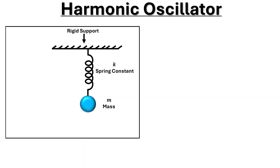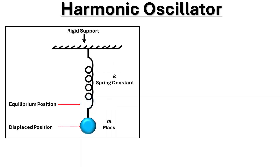We have a pictorial representation of a harmonic oscillator. We have a point mass m connected to one end of a spring which has a spring constant k, and the other end of the spring is connected to a rigid support. A position of point mass m where the net force acting on it is zero is called the equilibrium position. When it is displaced, it gives us displacement x.